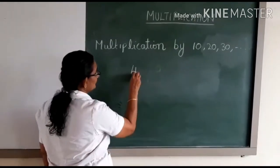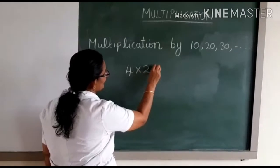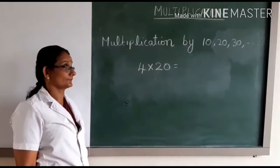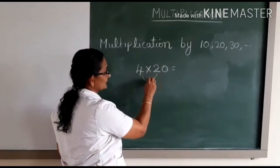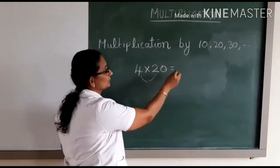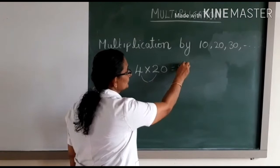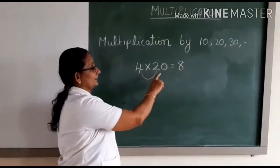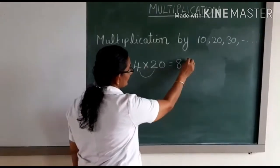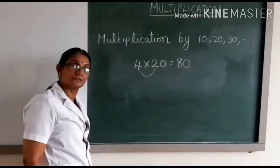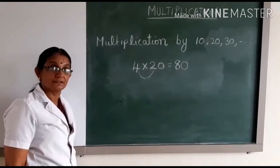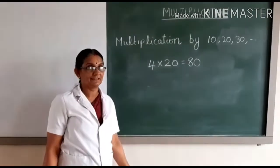Let us take for example 4 into 20. So how do we do this? First, you have to multiply the numbers 4 and 2. What is 4 into 2? 4 into 2 is equal to 8. Then place the zero to the right of the product you have got.